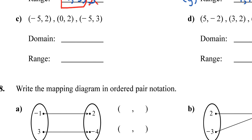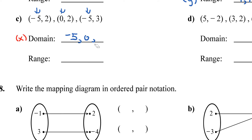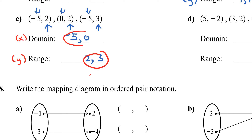For letter C, domain X values are negative 5, 0, and negative 5. Remove the repeat and the domain is negative 5 comma 0. Range Y values are 2, 2, and 3 — remove the repeat and the range is 2 comma 3.